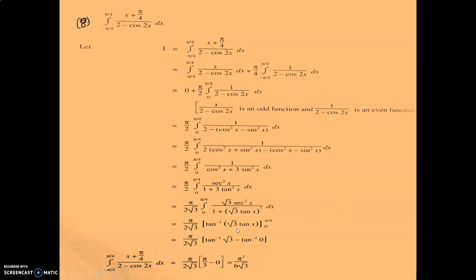Applying the limits: tan inverse(root 3 times tan(pi by 4)) equals tan inverse(root 3) equals pi by 3, and tan inverse(root 3 times tan 0) equals tan inverse(0) equals 0. So the result is pi upon (2 root 3) times (pi by 3 minus 0) equals pi square upon (6 root 3), which is the answer for this question.